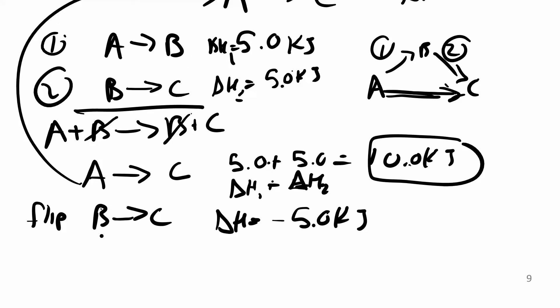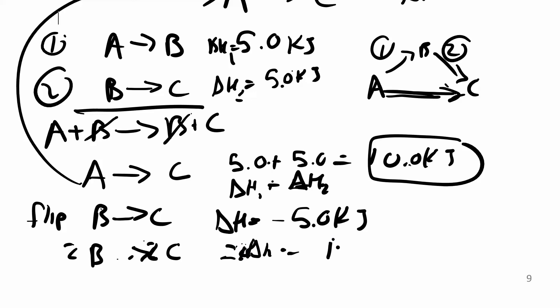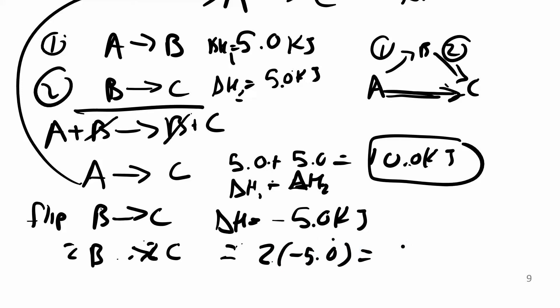If I want twice as much — say 2 moles of A to 2 moles of B — I get 10 kilojoules, twice what I got before. If I have 2B goes to 2C, I should get 2 times whatever delta H is. So if I multiply everything by 2, I multiply delta H by 2: 2 times negative 5 gives negative 10 kilojoules. Three rules for enthalpy: if you reverse the reaction, change the sign of delta H; if you multiply the reaction by 2, multiply delta H by 2; and if you add two reactions, just add their delta H's.